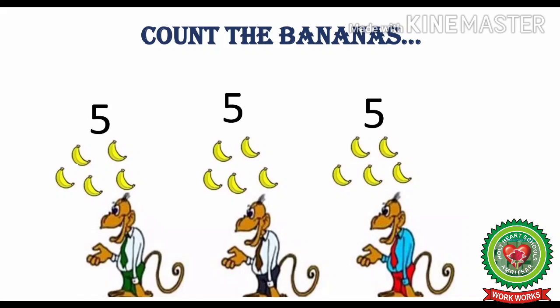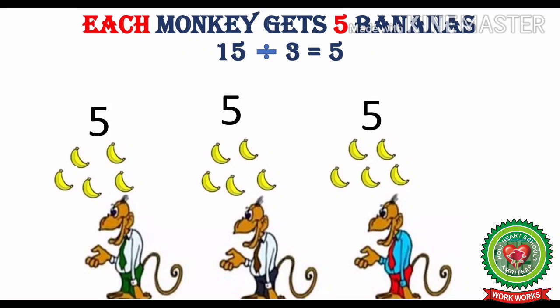The second monkey got 1, 2, 3, 4, 5 bananas. And the third monkey got 1, 2, 3, 4, 5 bananas. So when we make 3 groups of 15 bananas, each group gets 5 bananas. Each monkey represents 1 group. So each monkey gets 5 bananas, which tells us 15 divided by 3 is equal to 5.